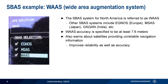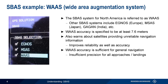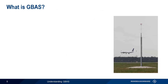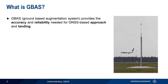Note that while WAAS accuracy is sufficient for general navigation — that is, flying from one airport to another — it is not sufficient for GNSS-based approaches or landings. The Ground-Based Augmentation System, or GBAS, is a way of enhancing the accuracy and reliability of GNSS such that it can be used for approach and landing, something that is not possible with SBAS.